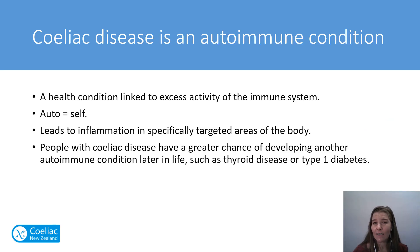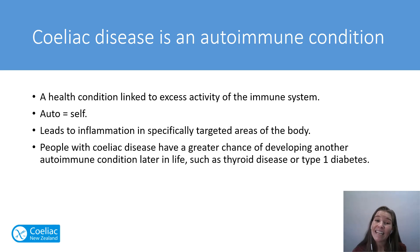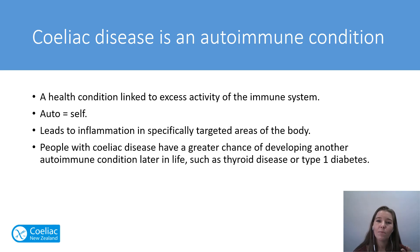Another important part of celiac disease is knowing that it's an autoimmune condition. Auto means self. Autoimmune means excessive activity of the immune system — the same immune system that fights off viruses and bacteria, and helps your body clean up a cut or scratch. When we have an autoimmune condition, we see overactivity of certain parts of the immune system that specifically starts to target areas of the body.